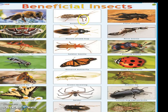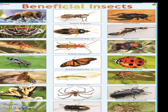Dragonfly, Assassin bug, Minute pirate bug, Soldier beetle, Monarch butterfly, Green lacewings, Spider, Big-eyed bug, Field cricket, Rove beetle, Burying beetle, Ladybird beetle, Robber fly, Ginger bug egg parasite, and Damsel bug. This will help you in your further study.